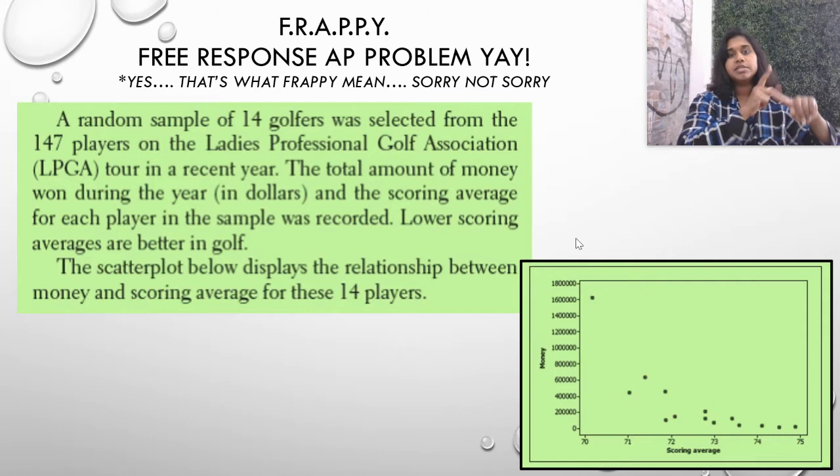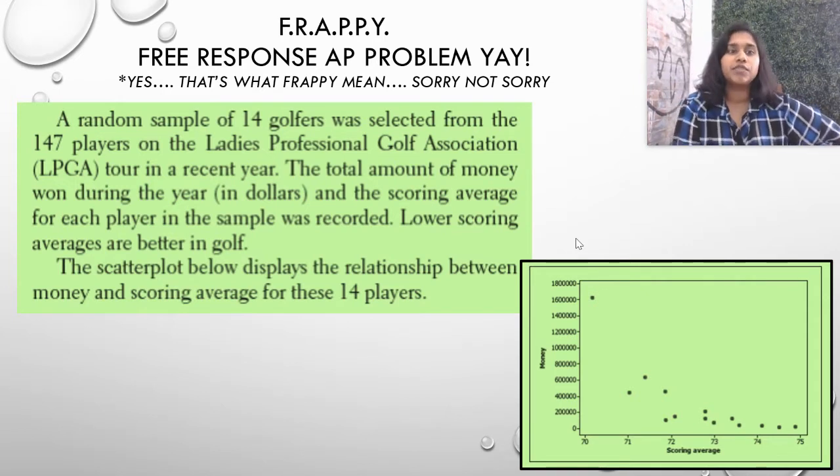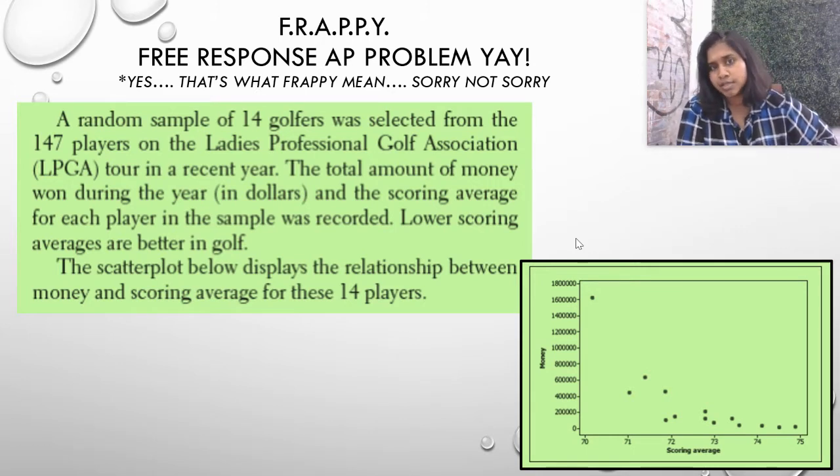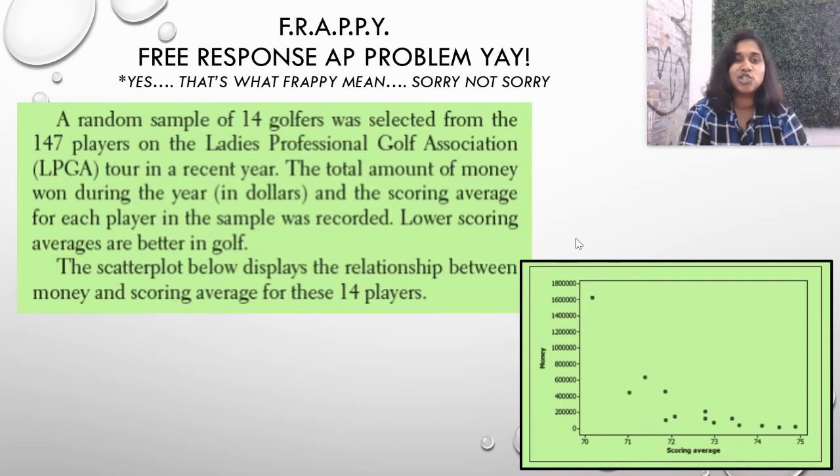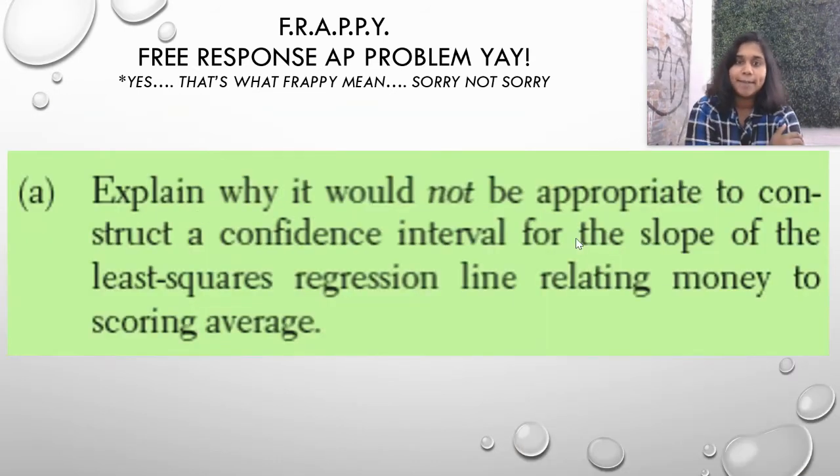A random sample of 14 golfers was selected from 147 players on the Ladies Professional Golf Association, the LPGA Tour, in their recent year. The total amount of money won during the year in dollars and the scoring average for each player in the sample was recorded. Lower scoring averages are better in golf. The scatterplot below displays the relationship between money and scoring average for these players. Let's jump into question A.